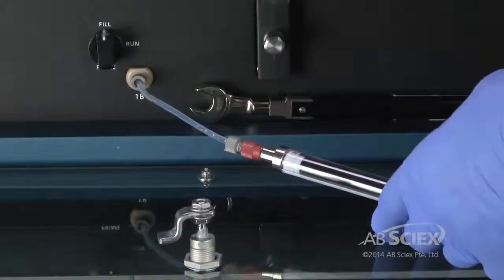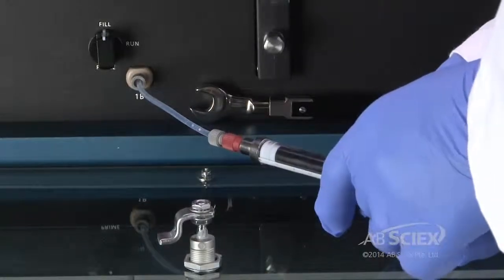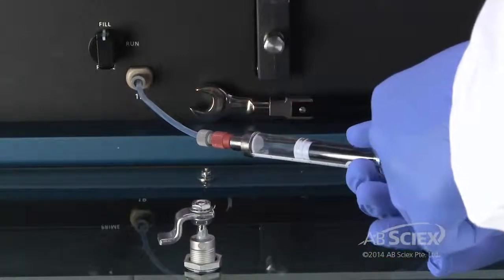Rotate the Prime Valve knob to fill. The fill position connects the syringe to the mobile phase bottle. Pull the plunger to fill the syringe.